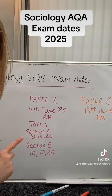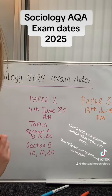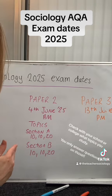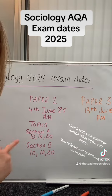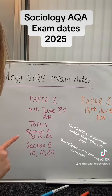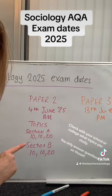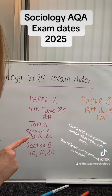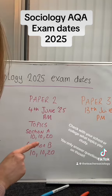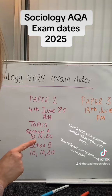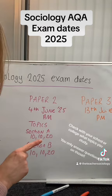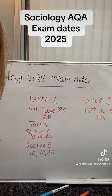Then we've got Paper 2, which is your Topics paper. There are eight topics in total — four in Section A and four in Section B. You choose one from each section, and in each you do a 10-mark outline and explain, a 10-mark with an item, and a 20 mark.